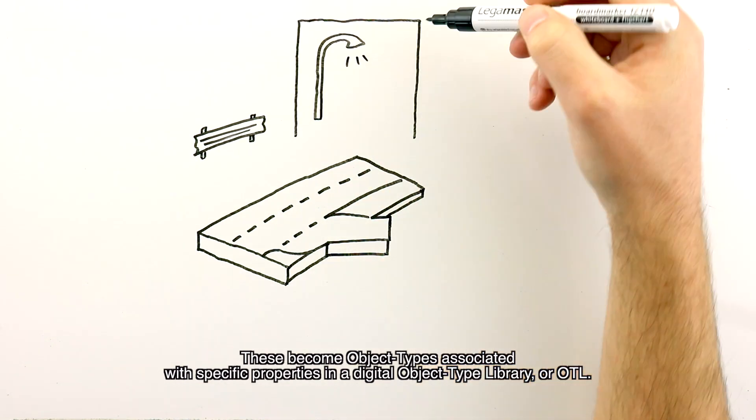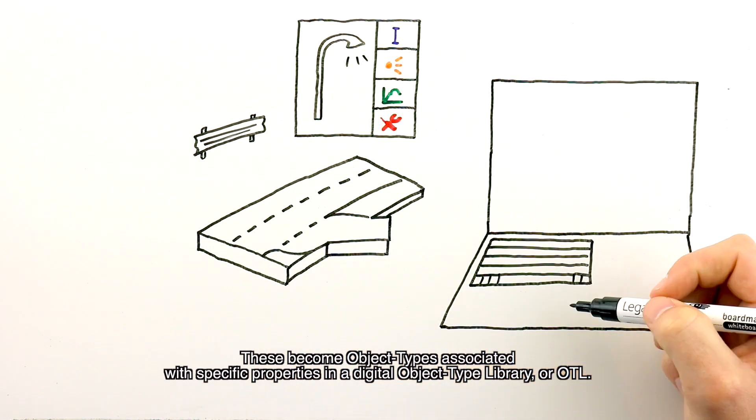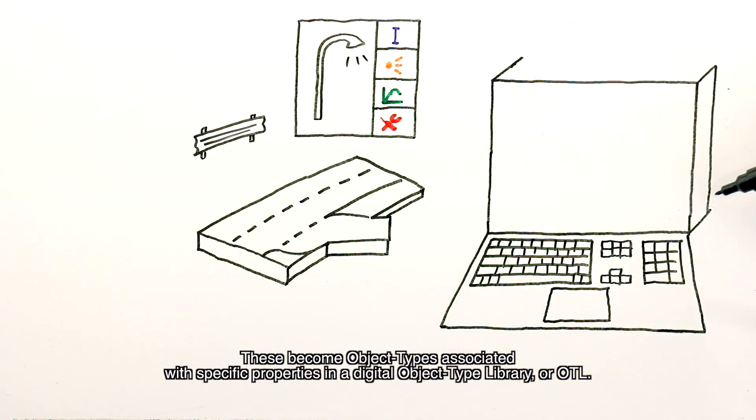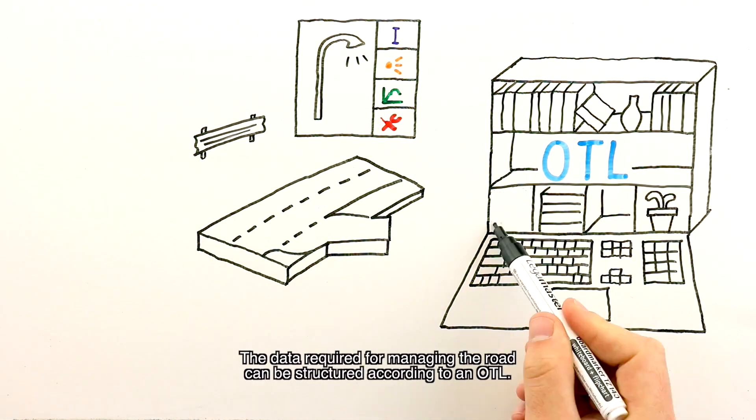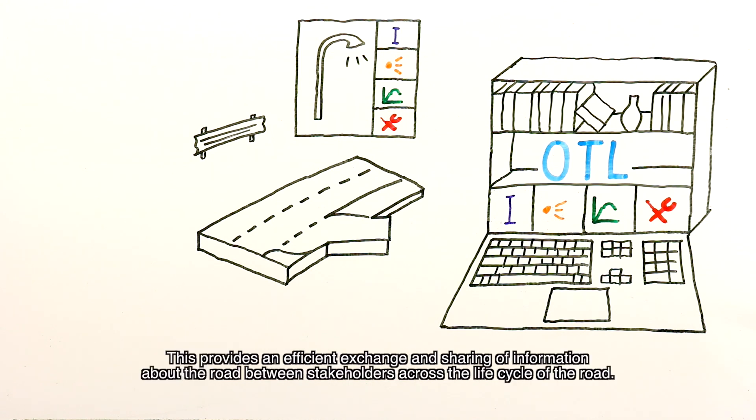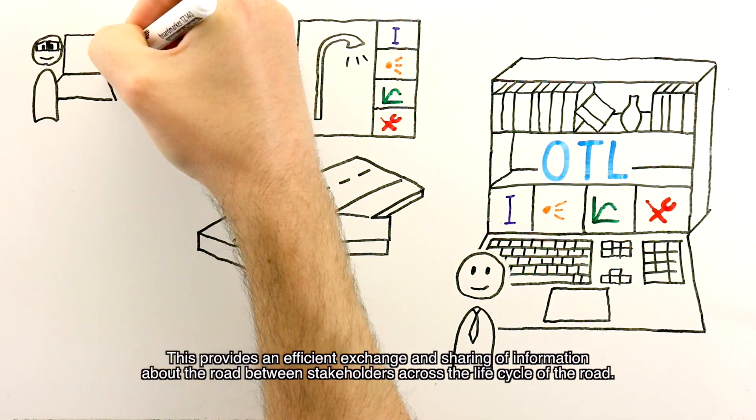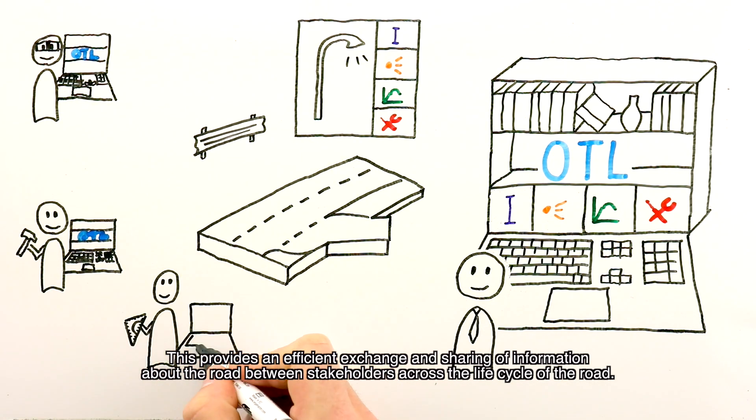These become object types associated with specific properties in a digital object type library or OTL. It provides the backbone of the digital twin of the road. The data required for managing the road can be structured according to an OTL. This provides an efficient exchange and sharing of information about the road between stakeholders across the life cycle of the road.